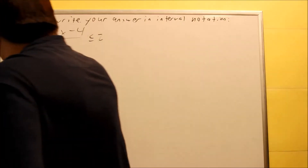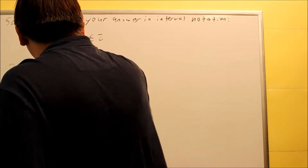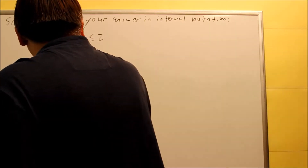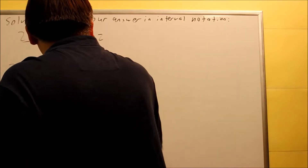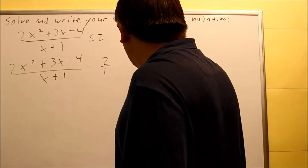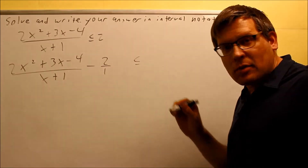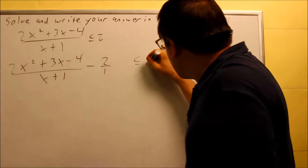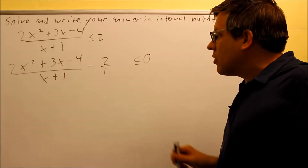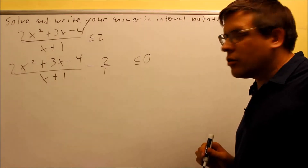We have 2x squared plus 3x minus 4 over x plus 1. We're going to subtract the 2 — and I'm going to leave a space here because I'm going to have to get some common denominators in a second — but now I do get the zero after the inequality. So by bringing that over, we now get the correct zero there.